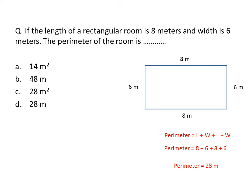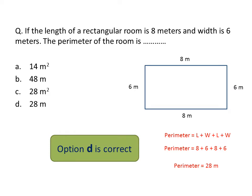Remember that for perimeter, the unit is just meters — because we are adding lengths together, giving us a single straight line total of 28 meters. Also remember: for perimeter, the unit is the same as the unit of length (meter, centimeter, kilometer), whereas for area the unit becomes square meters. Option D is correct.